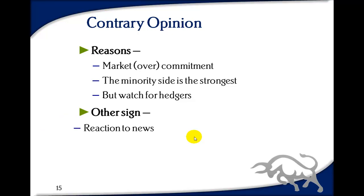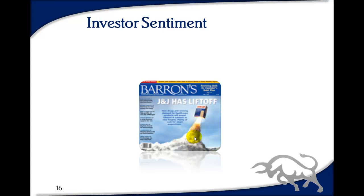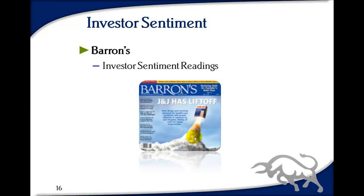Investor sentiment is a similar idea. Barron's publishes an investor sentiment rating each week that tells you what percentage of people are bearish and bullish, giving you a clue of where market thinking stands. Basically, if more than 55% of people are bullish, that's bad for the market — too many people think it's going up forever. And if less than 35% think the market is bullish, that's probably too pessimistic a view and it's good for the market — it will likely turn into a bull market.